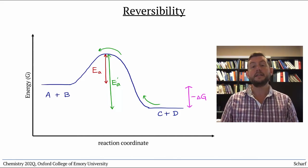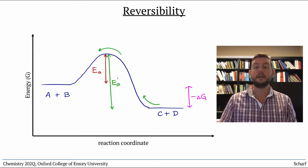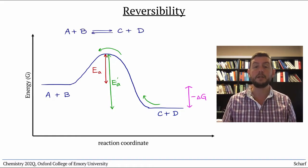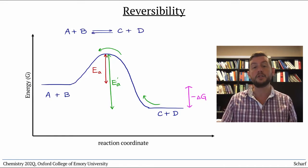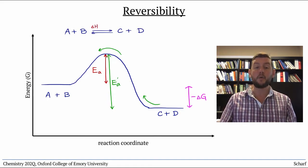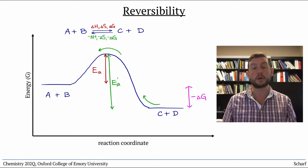Taken together, this is called the principle of microscopic reversibility. That every individual chemical reaction can be reversed if the products collide with each other in the precise orientation and with sufficient kinetic energy to go backward. And all of the thermodynamic quantities, delta H, delta S, and delta G, are equal magnitude but opposite sign for this reverse process.